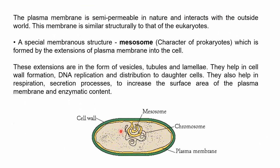The plasma membrane is semi-permeable in nature — it allows certain molecules to pass while blocking others, and it interacts with the outside world. This membrane is similar in structure to that of eukaryotes. Special membranous structures called mesosomes, unique to prokaryotes, are formed by extensions of the plasma membrane into the cell. These extensions can be in the form of vesicles, tubules, or lamellae. Mesosomes help in cell wall formation, DNA replication and distribution to daughter cells, and also in respiration and secretion processes, increasing surface area.